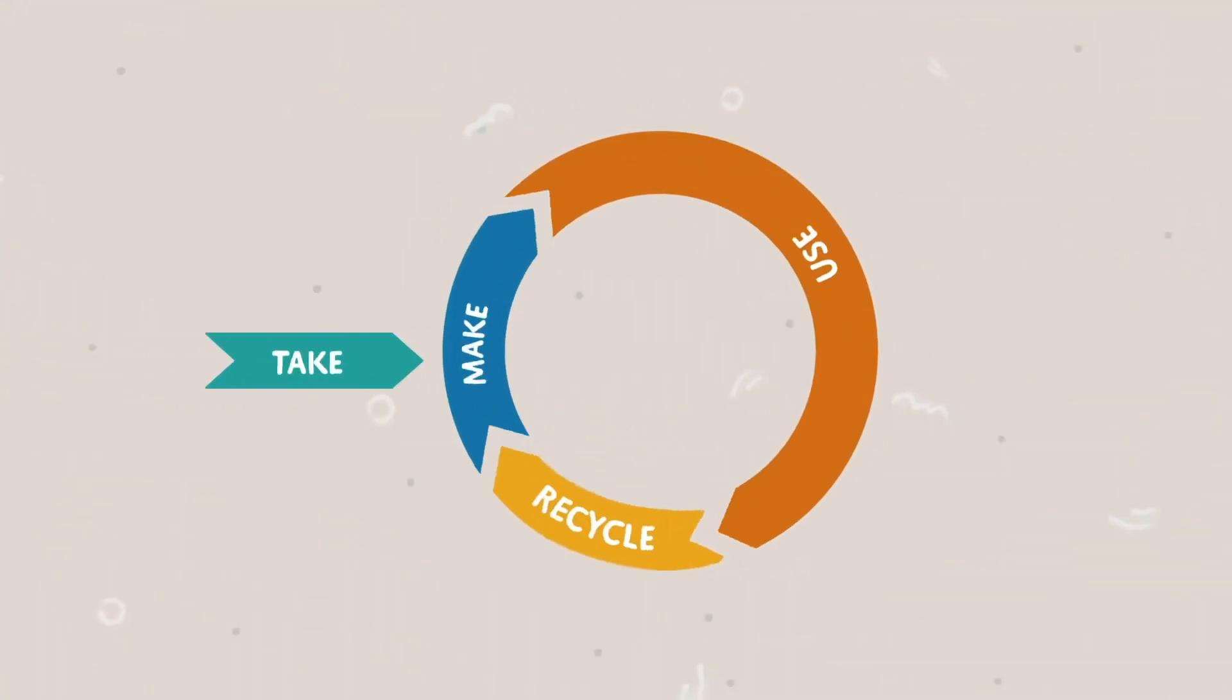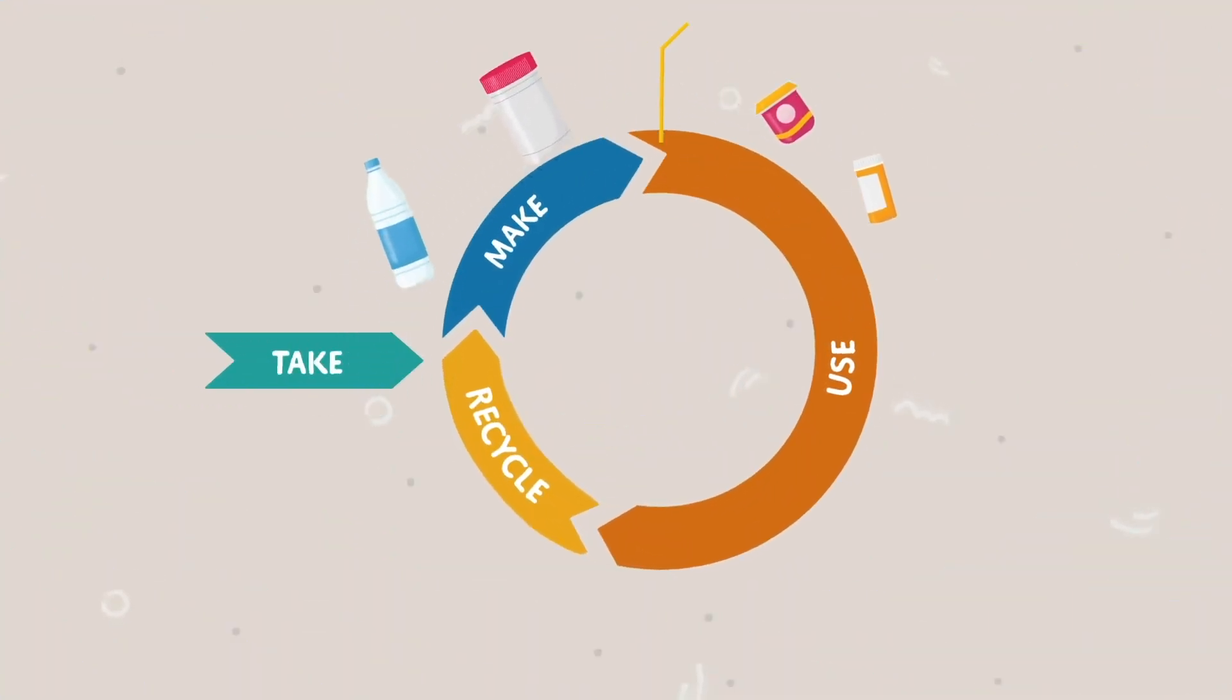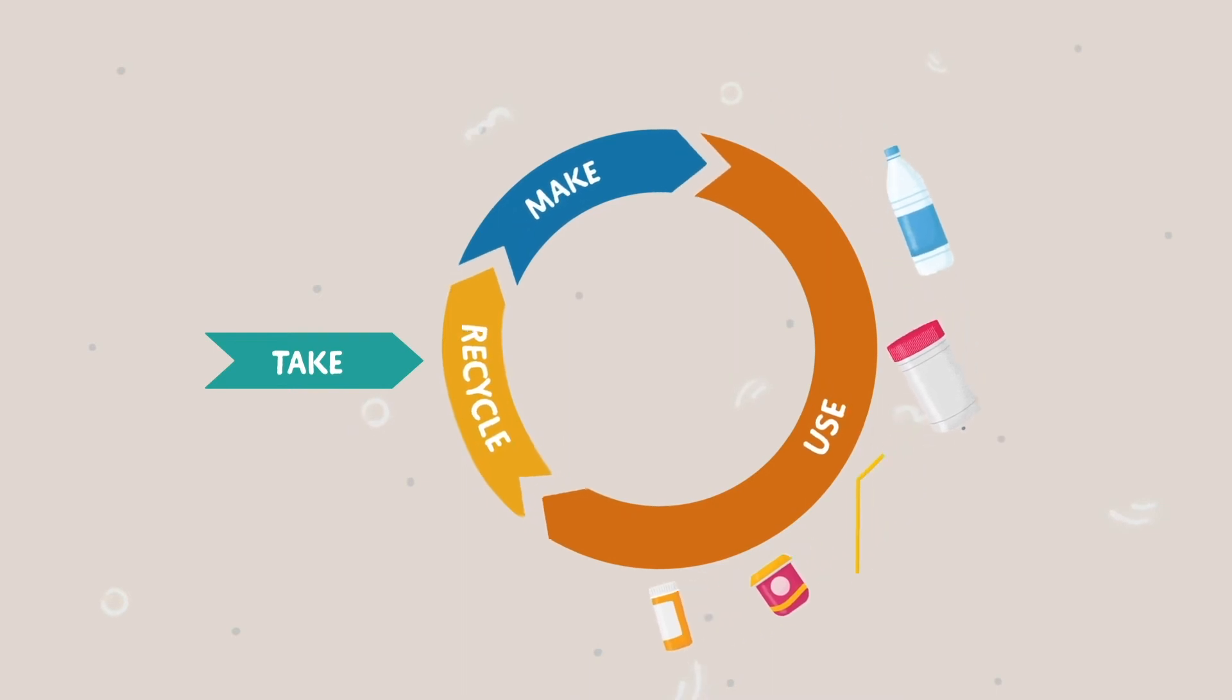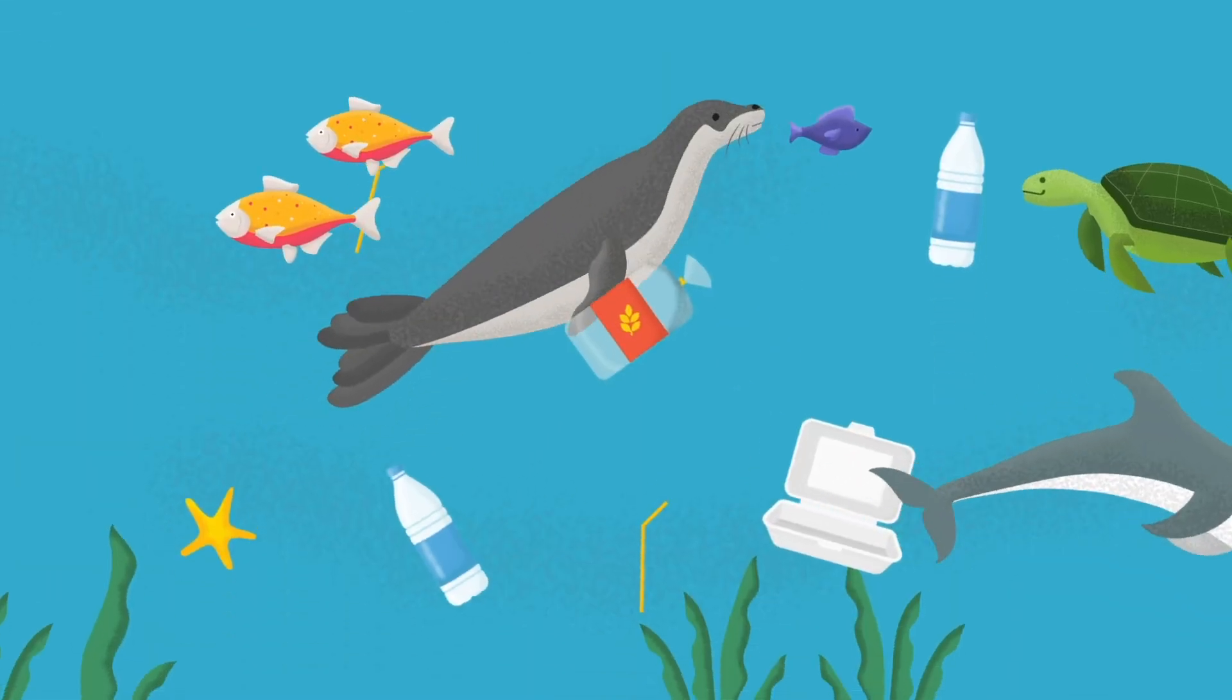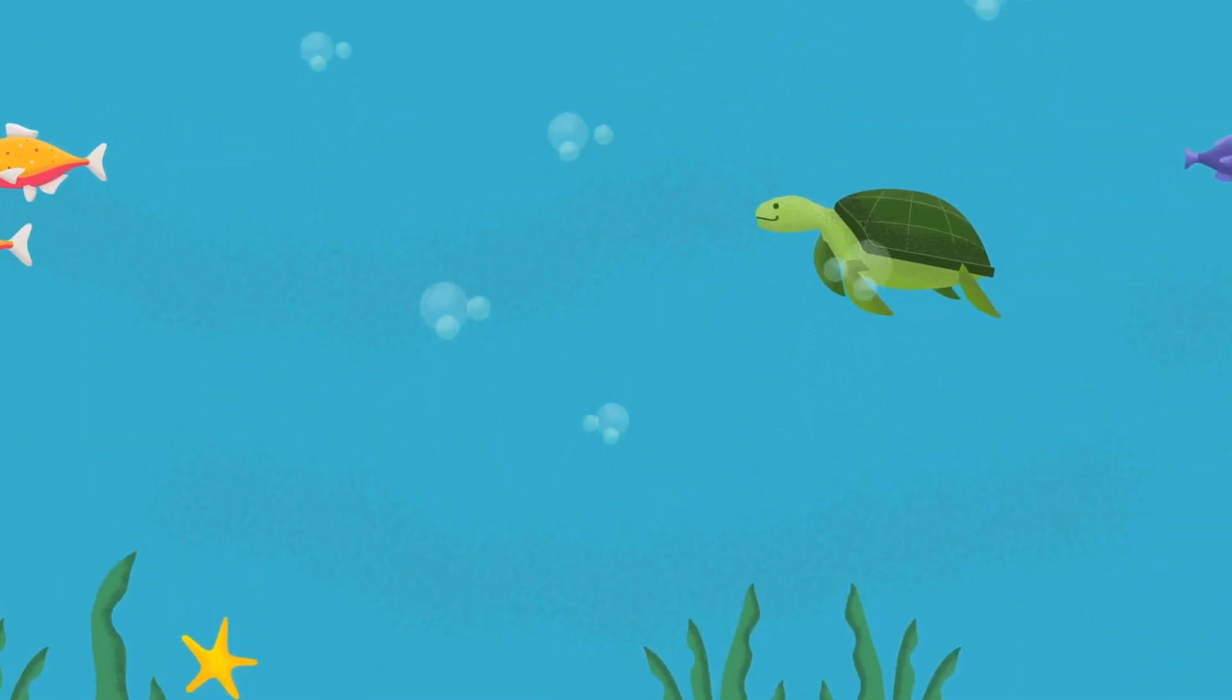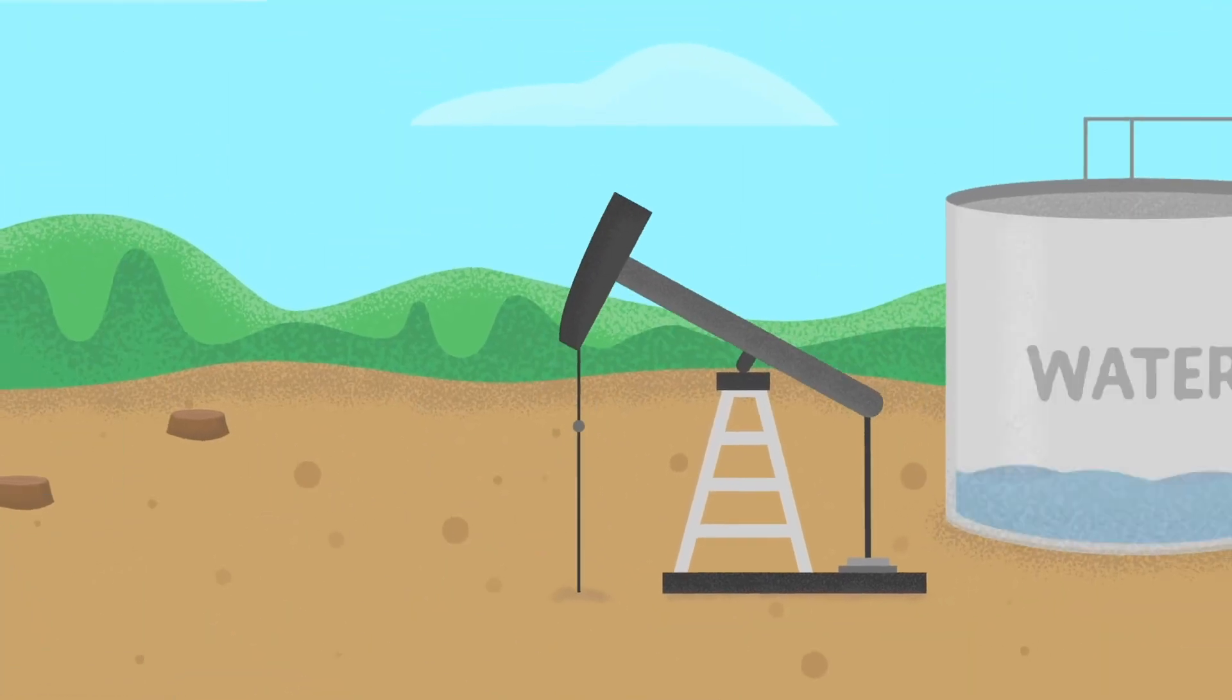In the circular economy, these products are used for as long as possible, and at the end of their life cycle, what would have been garbage is converted into raw material to create new products instead, keeping them out of the environment while also reducing our dependence on resource extraction.